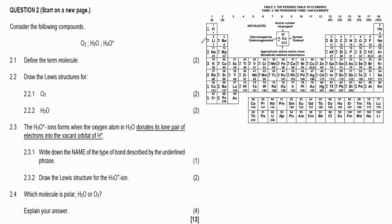So we have question two on atomic combinations. It says consider the following compounds. We have oxygen gas, H2O water, and then H3O plus, our hydronium ion. Then 2.1 says define the term molecule.